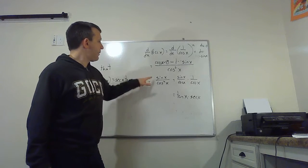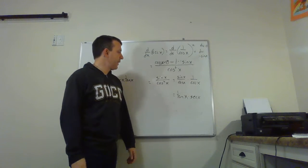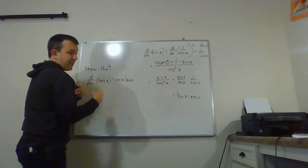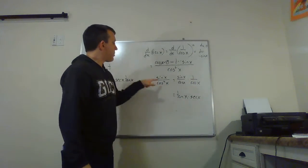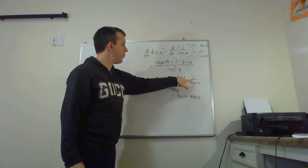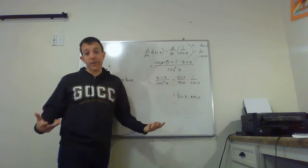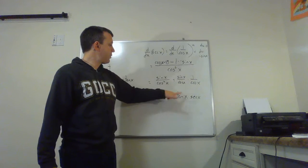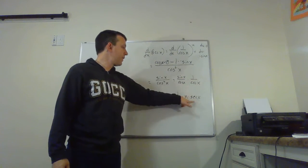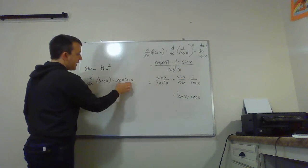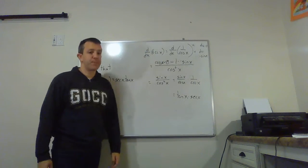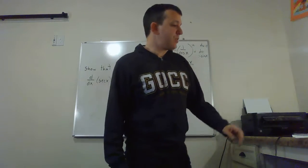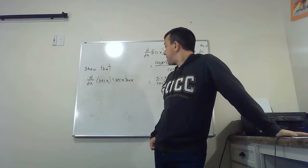We have sine x over cosine squared x. I broke up that cosine squared because tangent is sine over cosine, so I split it into sine over cosine times one over cosine. Those are the same thing — multiply them back and the cosines recombine. Sine over cosine is tangent, one over cosine is secant, so we get tangent x times secant x, which equals secant x times tangent x. Multiplication is commutative — we just derived the derivative of secant!